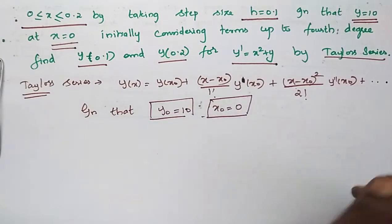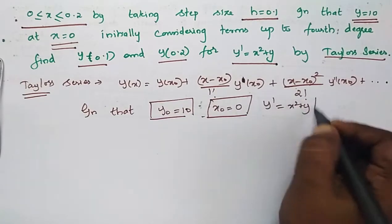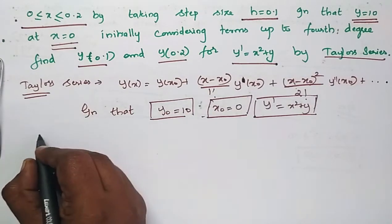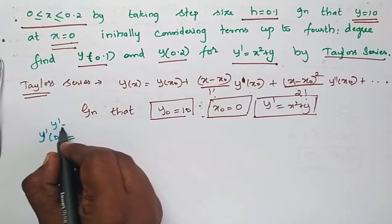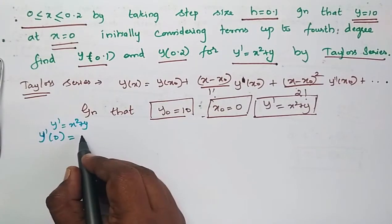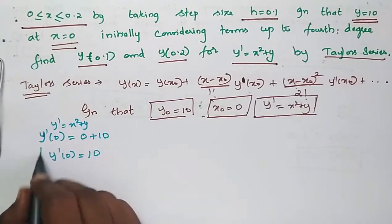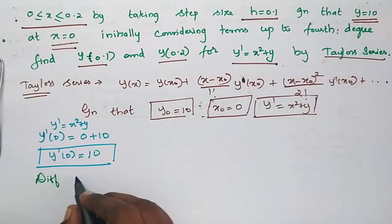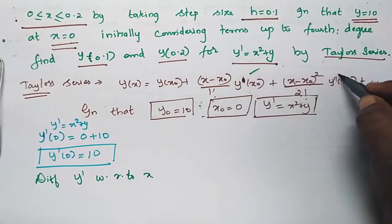With y₀ = 10 and x₀ = 0, and y' = x² + y, we substitute: y'(0) = 0² + 10 = 10. Now we differentiate y' with respect to x to find y'', y''', and so on.